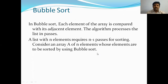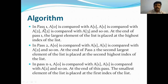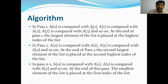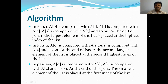Consider an array A of n elements to be sorted using bubble sort. In pass one, the value at a[0] is compared with the value at a[1] — the first two elements are compared. Then a[1] is compared with a[2], then a[2] is compared with a[3], and so on till the end of the list.